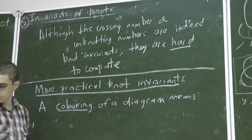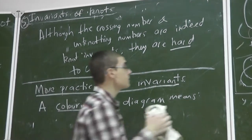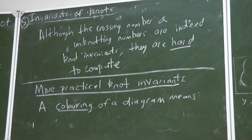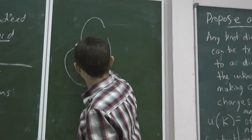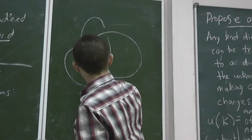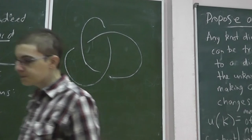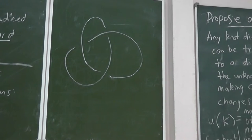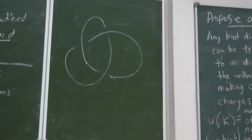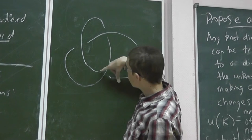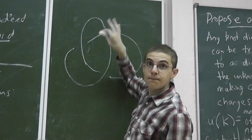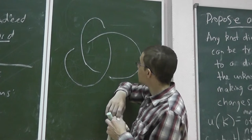A colouring of a diagram is... For each, I'll draw a picture while I define it. Alright, so given a diagram for a knot, a colouring means for each arc. Let me describe what I mean by an arc.